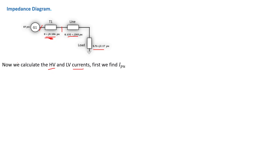We need to find the current flowing on the high-voltage side and the low-voltage side. Remember it's a series circuit, but because there is a transformer, the current on the high-voltage side is not the same as on the low-voltage side — this is the primary current and this is the secondary current. Before we do that, we need to find I per unit for the entire system. The formula is: I per unit equals one divided by Z per unit total. The '1' is actually V per unit, which is always equal to one in a balanced normal system.